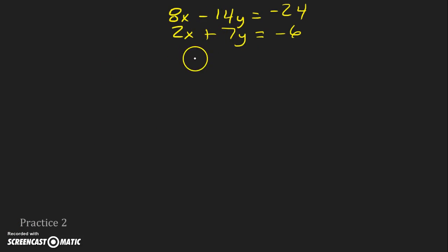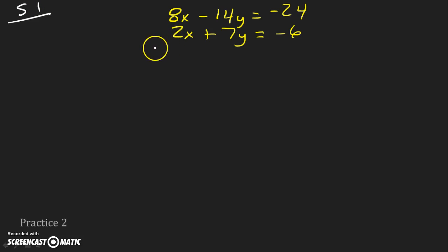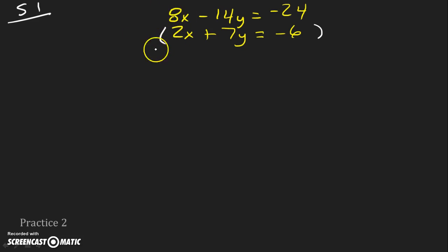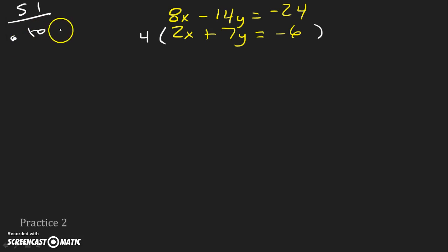Here we have a new system with no opposites or same numbers, so we'll have to multiply to create an opposite or the same. In the last example we created an opposite, so in this example let's see what happens when we create the same number. We can create the same in front of x because 2 is a factor of 8, or the same in front of y because 7 is a factor of 14. It's easier to multiply by a positive number, so we're going to multiply the bottom equation by positive 4 to create an 8 in front of x.